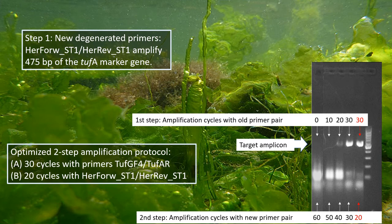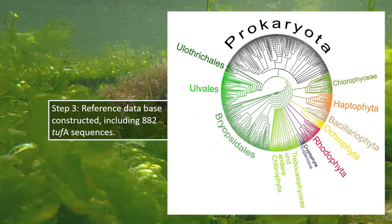Samples were first amplified over 30 cycles with the traditional primers, and the amplification product was then amplified for 20 more cycles with the new primer pair. We then constructed an aligned reference tufA database that currently includes 882 sequences. One-third of these sequences represents Ulvophyceae, one-third other eukaryotes, and one-third prokaryotes.